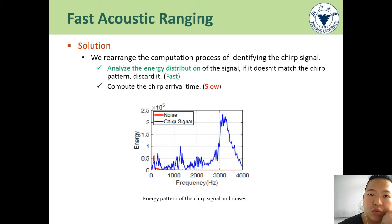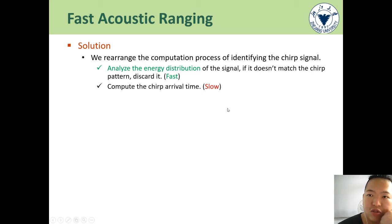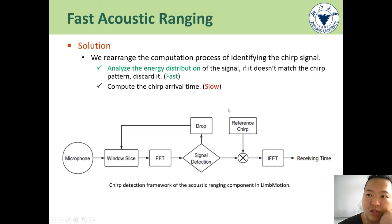To solve this, we divide the correlation computations into two parts. At first, we judge if the chirp signal exists by analyzing the signal energy distribution. If the energy pattern matches, next we compute the signal receiving time based on the correlation in the frequency domain. After we reduce the computations for non-interested windows, the processing speed meets the requirement.